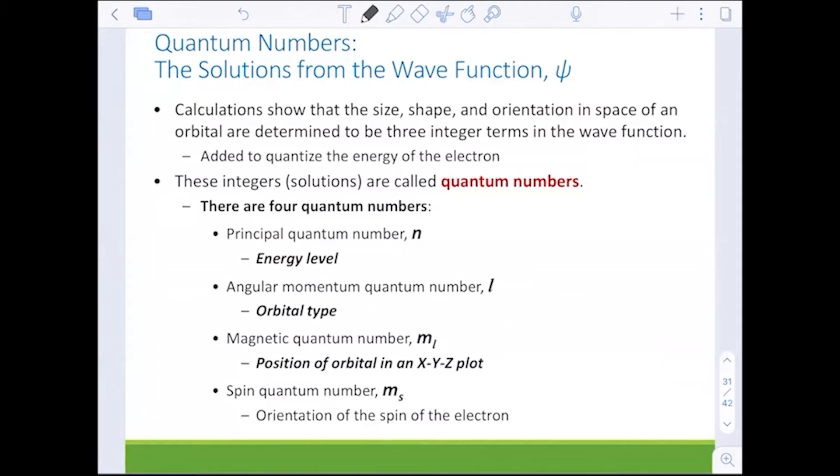The principal quantum number, the utmost important one, that is n. That's the n that we were talking about before. It's an energy level. n is going to help us determine what orbital level we're at—n equals one, n equals two.